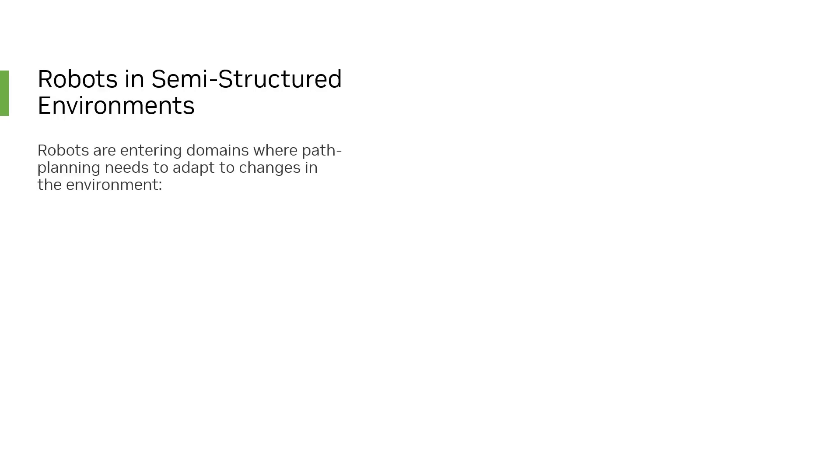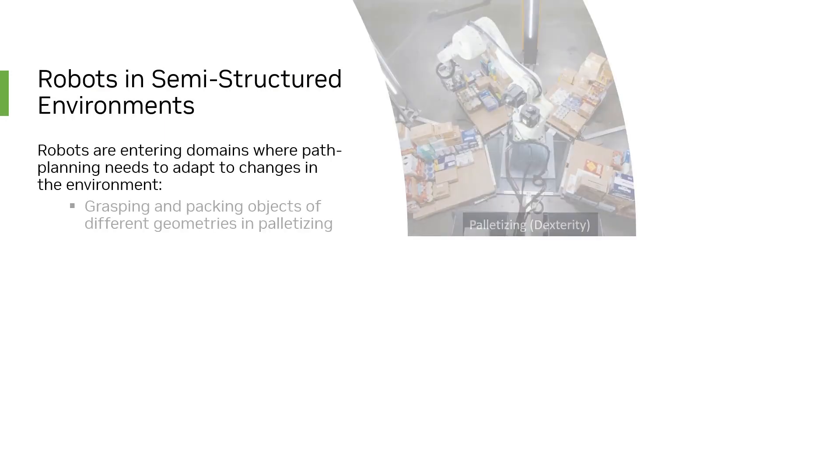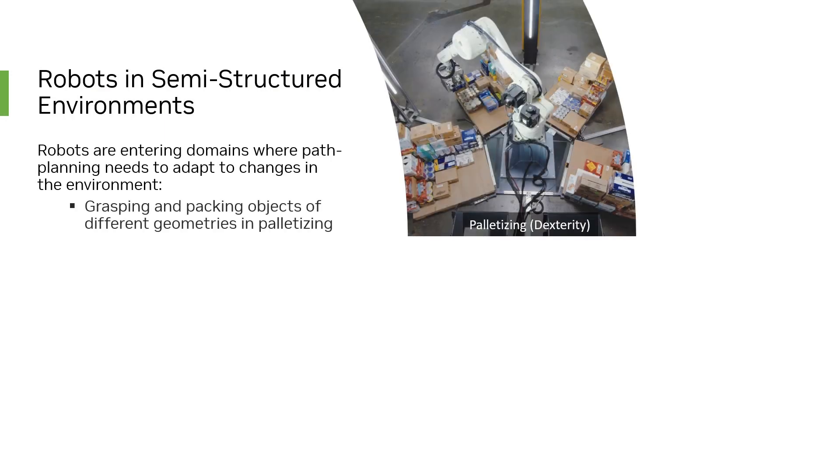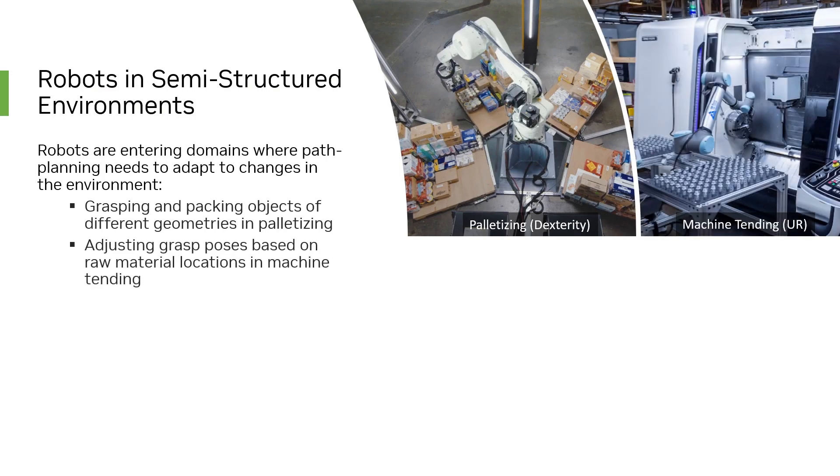Robots are entering domains where path planning cannot be pre-programmed requiring online re-planning. For example, in palletizing applications, objects of varying geometry need to be picked and packed in different constrained areas on the fly. In machine tending, robots need to account for small changes in path locations during replenishment cycles.